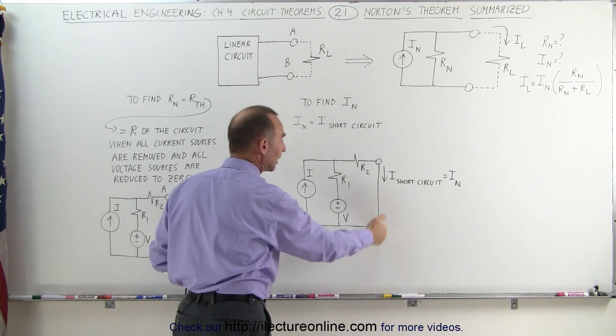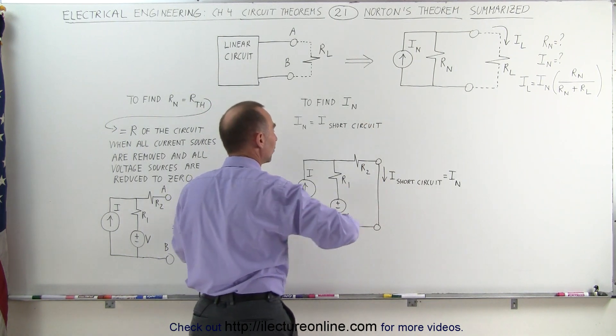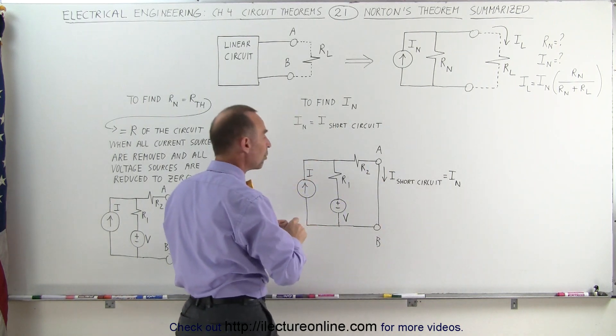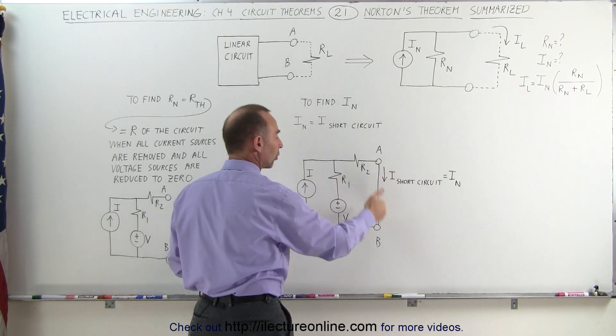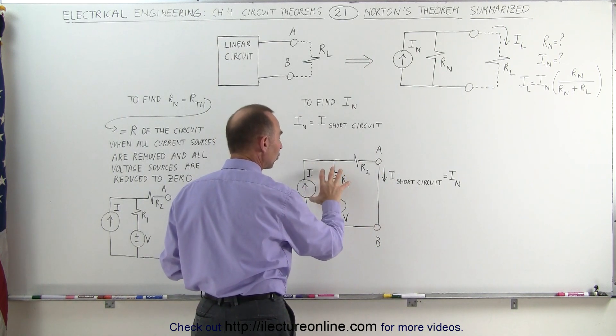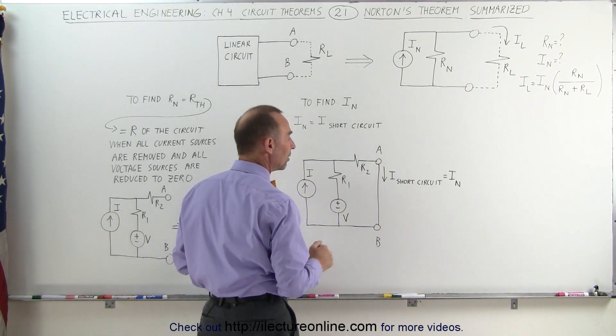In other words, we now connect the wire between A and B, and I should have marked this as A and B. In other words, we short-circuit the terminals AB, we remove the load resistor, we put a short in there, and then we figure out what the current will be with the original circuit in place and the terminals A and B shorted out.